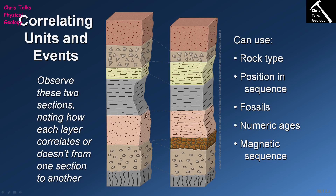Over the top of this sandstone we have this grey unit which appears to be a mudstone of some kind. For this particular model, I'm going to suggest that maybe it was deposited as part of a fluvial system — so maybe this mudstone actually represents floodplain sediments. What seems to have happened is our desert has now been covered over by a river system which is occasionally flooding and depositing layers of mud.